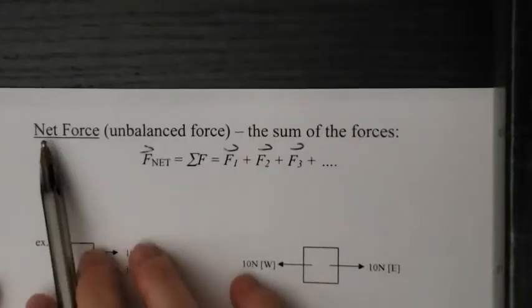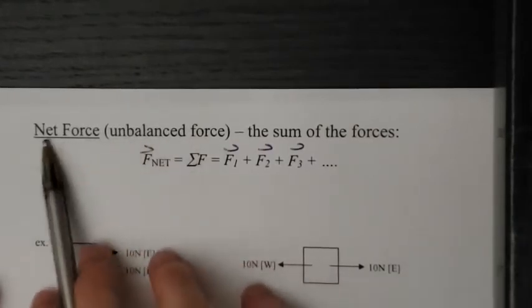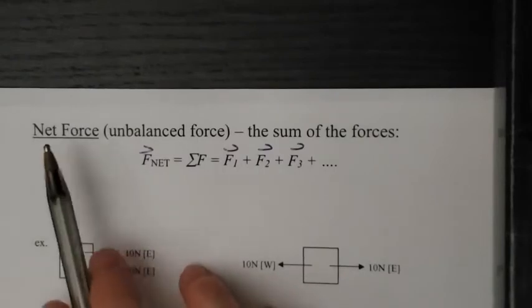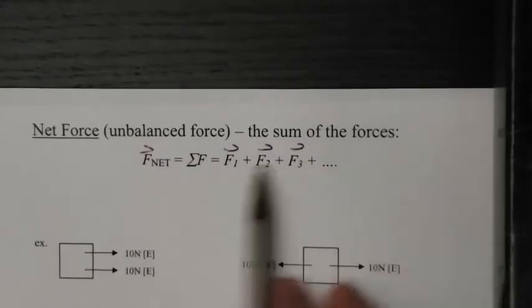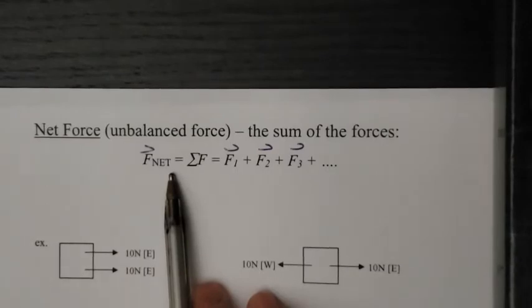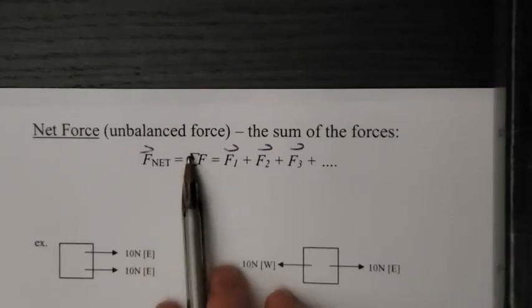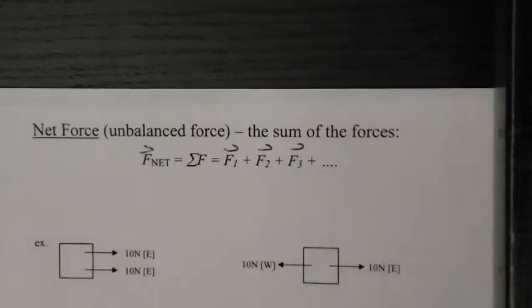Another definition is the net force or unbalanced force. Two words mean the same thing. So net force, unbalanced force is exactly the same thing. Sometimes you'll hear me call it the net force. Sometimes I call it the unbalanced force. There is no difference. And it's the sum of all the forces. So Fnet, and we write out NET because FN is already used for normals. We need a different symbol. So Fnet stands for the sum of the forces. That's just a Greek symbol, means sum. And we're going to add the first force plus the second one plus the third one.